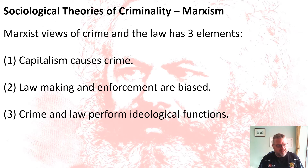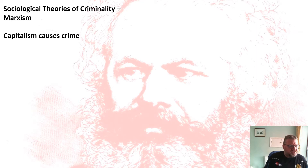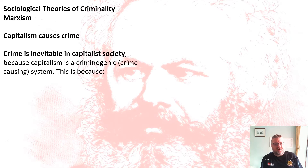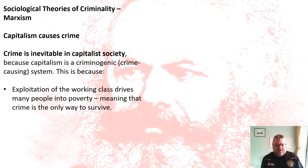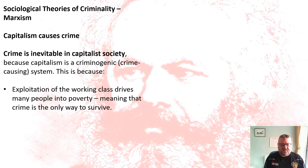Looking at the first element — capitalism causes crime — Marx argues that in a capitalist society crime is inevitable. Capitalism is criminogenic, a good word to use if you can: it is a crime-causing system. This is because the exploitation of the working class drives people into poverty, and because they're in poverty, crime becomes the only way to survive.